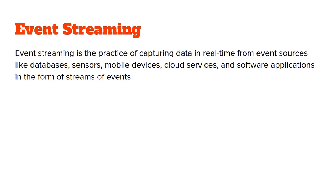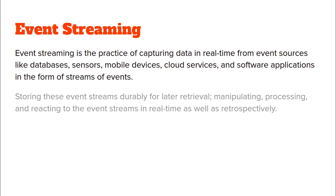In event streaming, the first process is capturing data in real time from various types of event sources. It could be databases, sensors, mobile devices, cloud platforms — it could be anything — and this data is received in the form of a continuous stream of events.